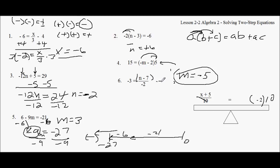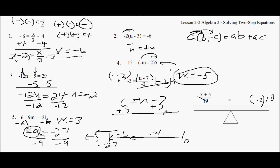For this last one, I'm going to multiply both sides by negative 2. A negative times a negative is positive 6 on the right. That cancels on the left, giving n minus 7. I add 7 to both sides and get 11 equals n. Good luck!